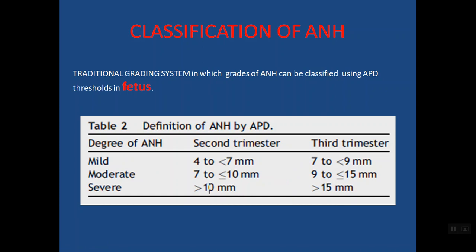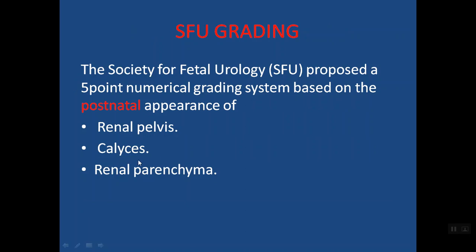Using APD, we can classify ANH into different grades. The thresholds differ in the second and third trimester. In the second trimester, an APD more than 4 mm but less than 7 mm is mild ANH, and beyond 10 mm it is severe. In the third trimester, an APD more than 7 mm but less than 9 mm is mild, between 9 and 15 mm is moderate, and beyond 15 mm is severe hydronephrosis.